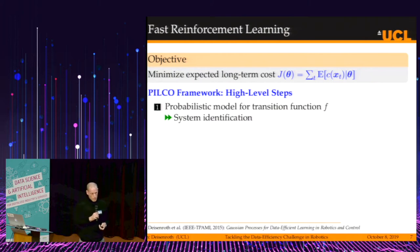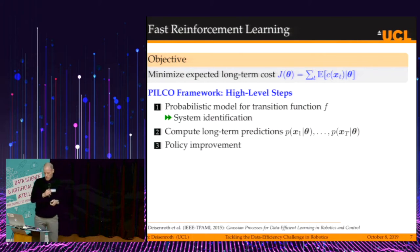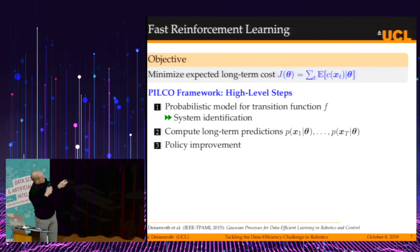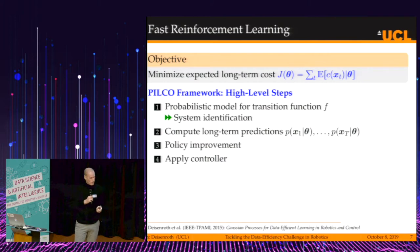Once this probabilistic model is learned, we use it to simulate what would actually happen in the real world — computing long-term predictions of the state evolution for a given controller parameterization. Then we improve the policy by tweaking these controller parameters in order to minimize the cost function. Once we have the controller, we apply it to the system. Conceptually: learn the model, long-term predictions, optimize controller parameters, apply the controller.